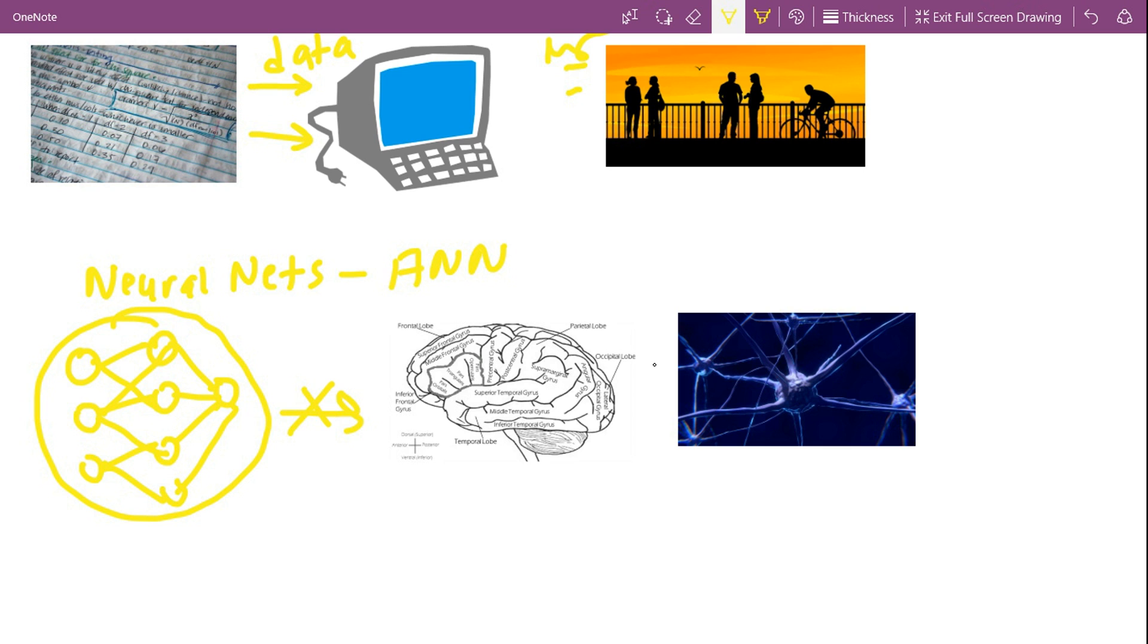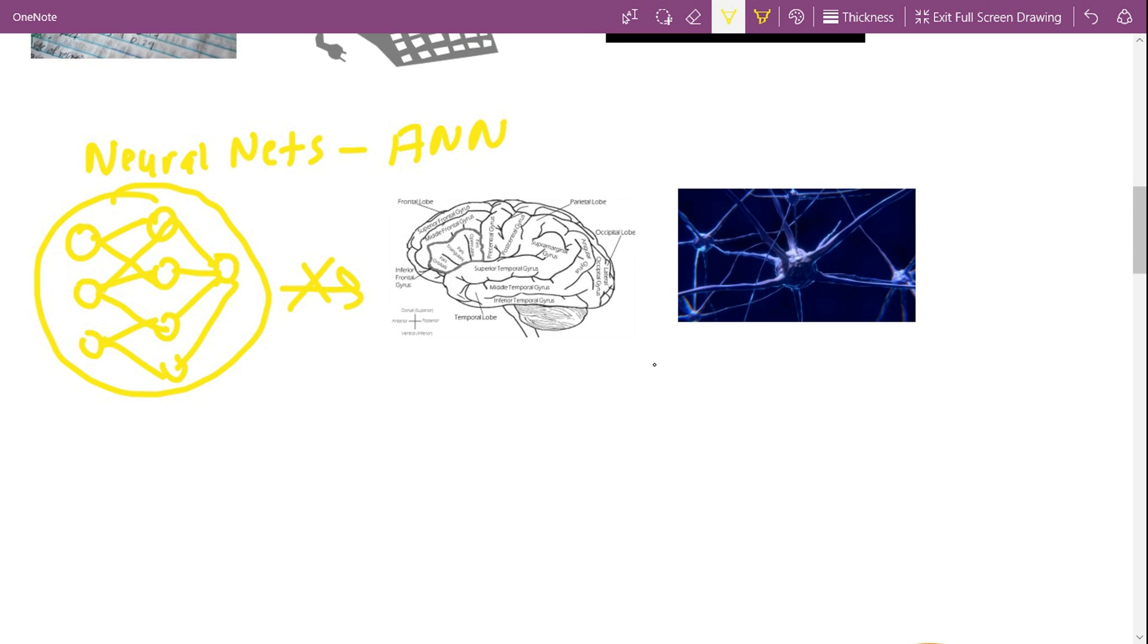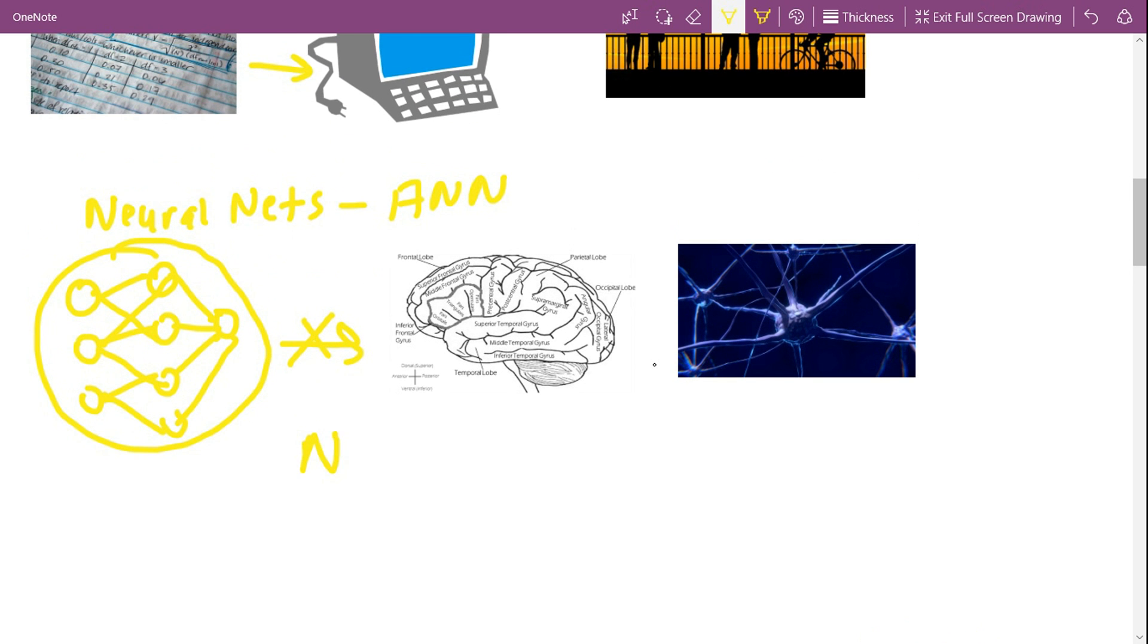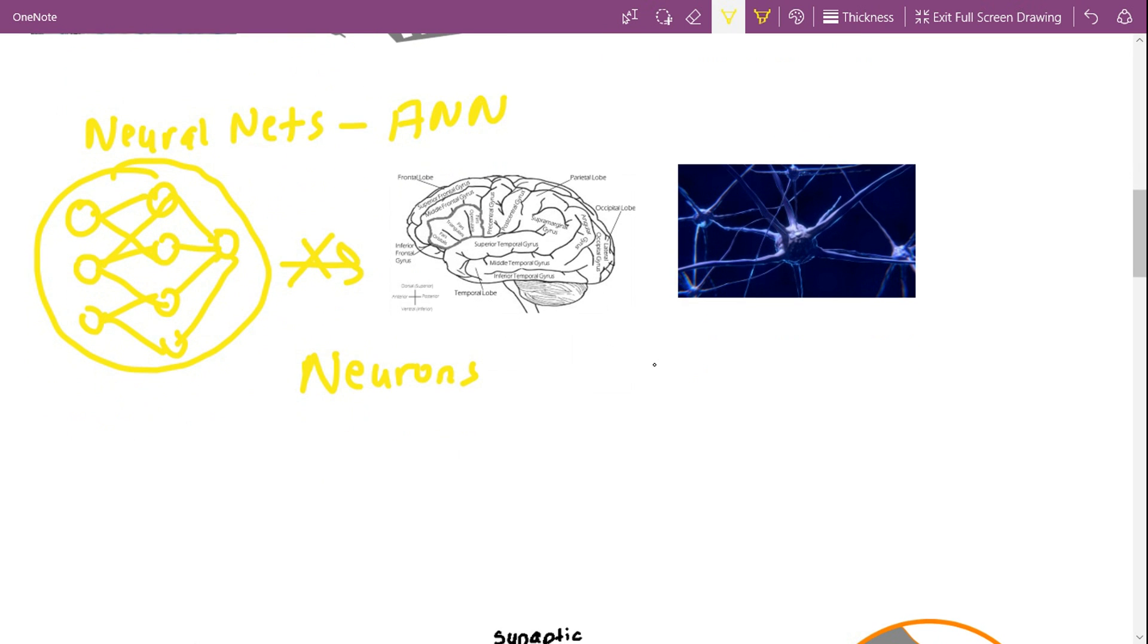It mimics the way in solving some of the real world problems like recognizing a familiar face or understanding handwritten digits. So before learning the neural networks, we shall quickly learn the structure and functionality of real neural networks, which is nothing but neurons or nerve cells.